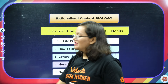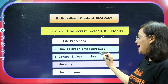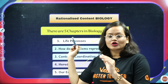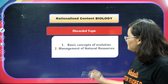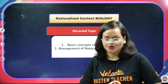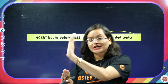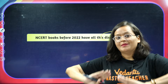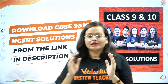If we talk about biology, you have five chapters: Life Processes; How Do Organisms Reproduce; Control and Coordination; Heredity; and Our Environment. Which topics have been removed? Basic concepts of evolution and Management of Natural Resources have been removed. NCERT books printed before 2022 will have all these discarded topics. But for students preparing for the board exam in the coming year, they will not study these discarded topics. I hope you have a very clear idea from this.